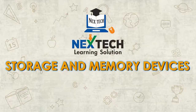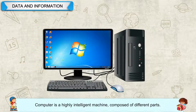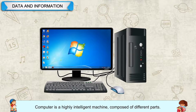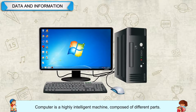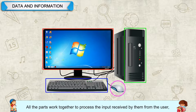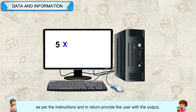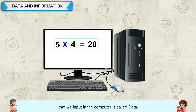Storage and Memory Devices. Data and Information: A computer is a highly intelligent machine composed of different parts. All the parts work together to process the input received from the user as per the instructions, and in return provide the user with the output. What we input in the computer is called data.